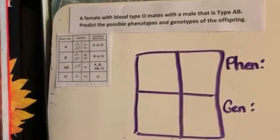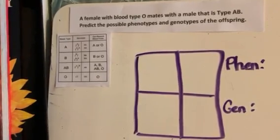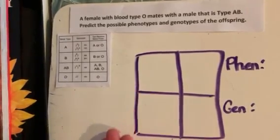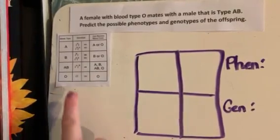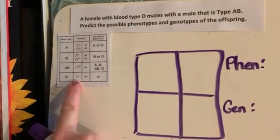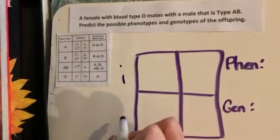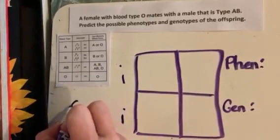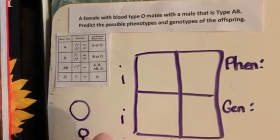Here's a problem: a female with blood type O mates with a male that is type AB. Predict the possible phenotypes and genotypes of the offspring. The female is going to go on one side and the male on the other. The female has blood type O, so using the chart, her genotype is lowercase i, lowercase i. I'll put that here — she is blood type O, this is the female.